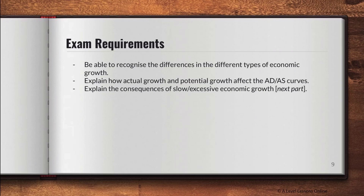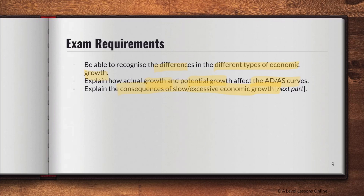For exam requirements, you want to recognize the differences between the four types of economic growth. In the long run we aim for sustainable and inclusive growth. Individually, look at the mechanisms of how AD and AS work for potential and actual growth. I've explained how actual and potential growth affects the AS and AD curves, and the next part will cover the consequences and causes of economic growth, including AD and AS factors.